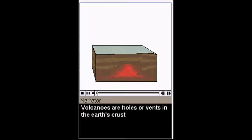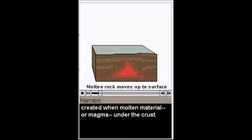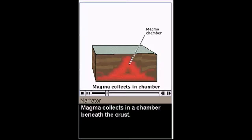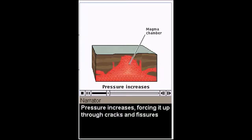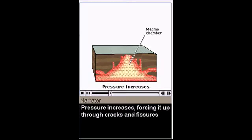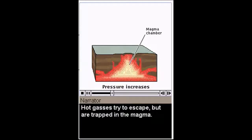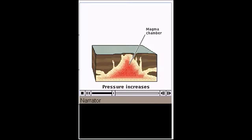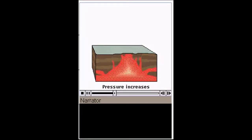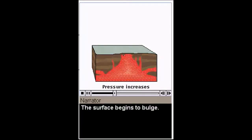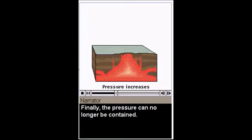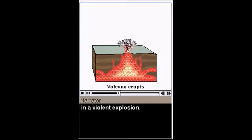Volcanoes are holes or vents in the Earth's crust, created when molten material or magma under the crust is forced upward through the surface. Magma collects in a chamber beneath the crust. Pressure increases, forcing it up through cracks and fissures, and a conduit to the surface is created. Hot gases try to escape, but are trapped in the magma. The surface begins to bulge. Finally, the pressure can no longer be contained. Gases and fragments of Earth are released in a violent explosion.